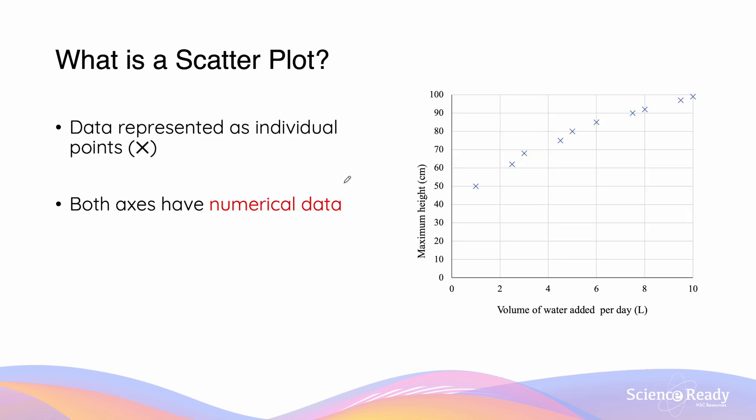So what is a scatter plot? A scatter plot is a simple type of graph where the data is represented by individual points, in this case x, which have been plotted onto the graph. Scatter plots are used where both axes have numerical or quantitative data.